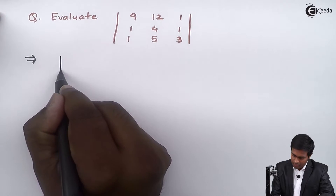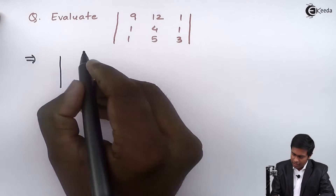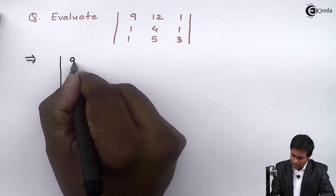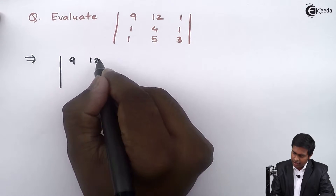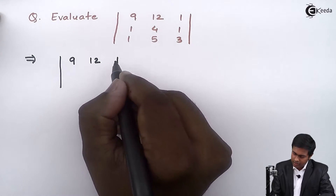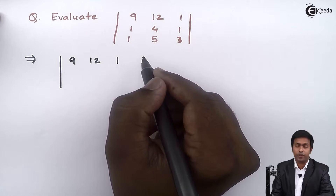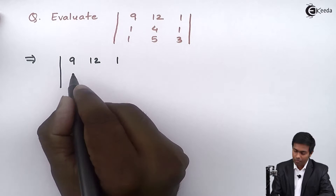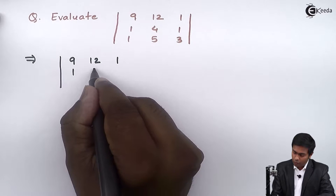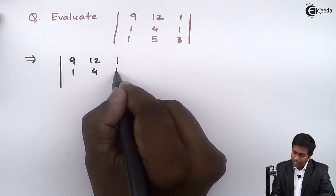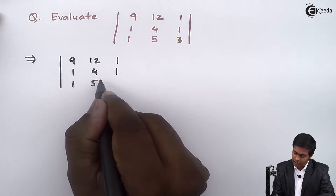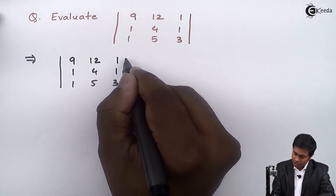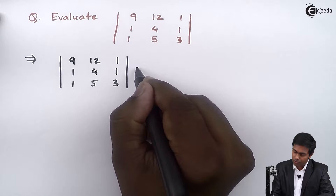First of all I'll write down the given determinant. The elements of the first row are 9, 12, 1. The elements of the second row are 1, 4, 1. And 1, 5, 3 are the elements of the third row.